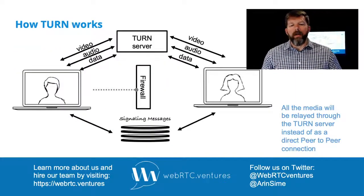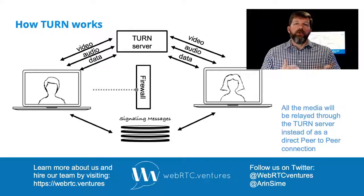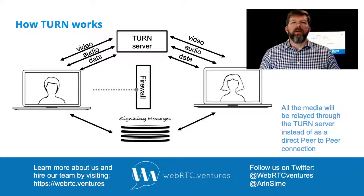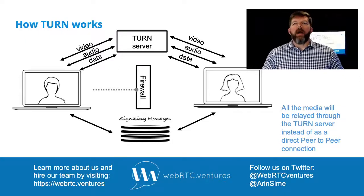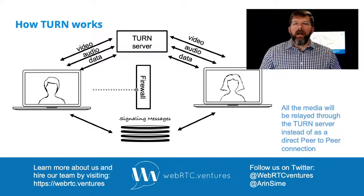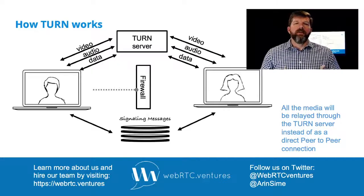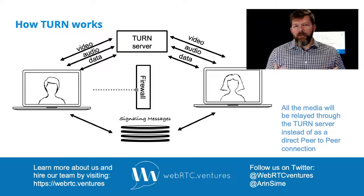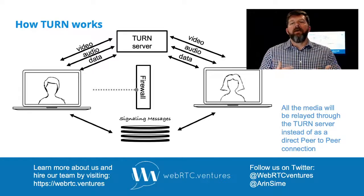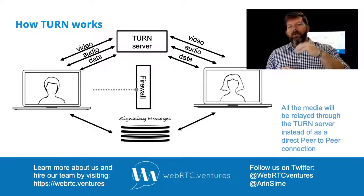This comes into play typically because there's a firewall between the two parties. One of the participants in the call is on a network protected by a firewall that's not allowing them to expose a direct IP address to their machine. So we go to the STUN server, we don't get a usable IP address for that user, and our signaling then falls back to the TURN server. The TURN server is able to establish a connection between the two parties where it can exchange video traffic — and all of that video, audio, and data channel content is relayed through that TURN server.